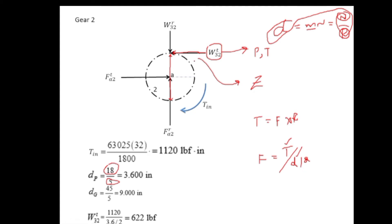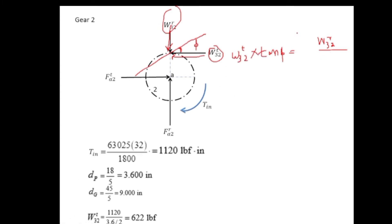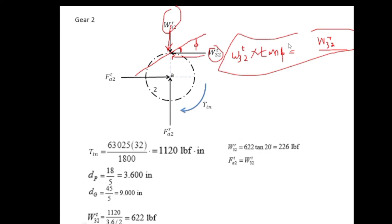Now let's find the radial component. Where the two gears mesh, the line of action makes a pressure angle of 20 degrees. The tangential and radial force components are the base and perpendicular of this triangle, so tan(φ) = w32r / w32t, which gives w32r = w32t × tan(20°). With w32t = 622 lbf and φ = 20°, we get w32r = 226 lbf.